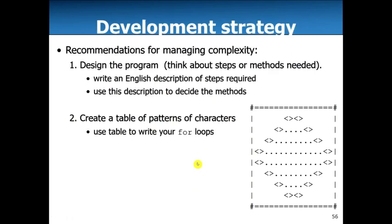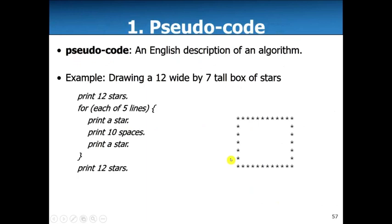First we're going to think about how to break up this problem, and then we're going to create a table to figure out how many spaces and how many dots we need for each of these sections, and then we can just translate that to a for loop. So first let's talk about an algorithm.